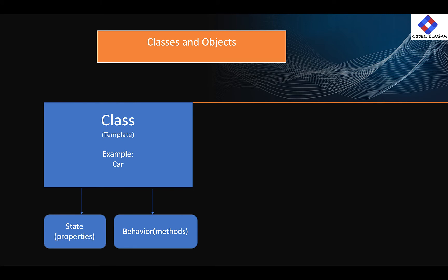The second element is behavior. In Java, behavior maps to methods — these are functionalities. For example, car is a class; drive is a functionality — that is a method. Car is a class, name is a property. What make, model, name of the car — those are properties. How do you drive? Driving is a method. So at a high level, a class has both state and behavior.